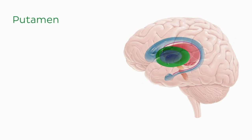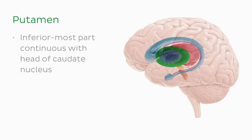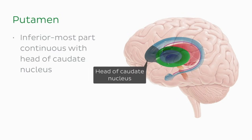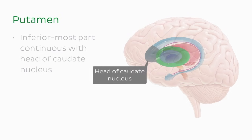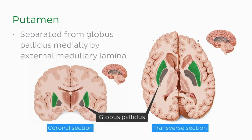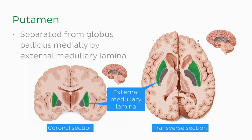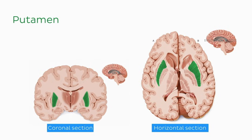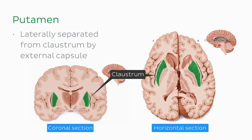The putamen is closely related to the caudate nucleus. In fact, its inferiormost part is continuous with the head of the caudate nucleus right about here. The putamen is separated from the globus pallidus medially by the external medullary lamina. Laterally, it's separated from the claustrum by the external capsule.